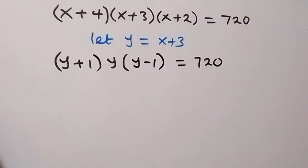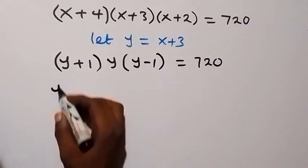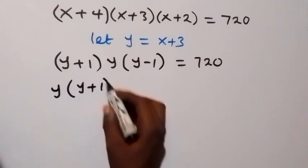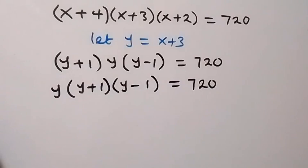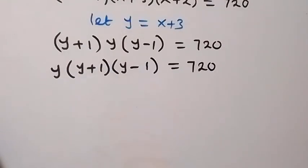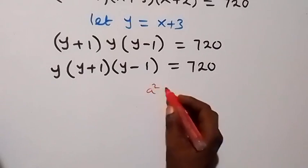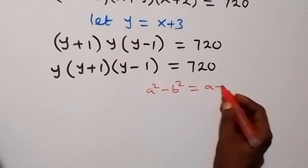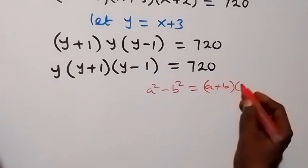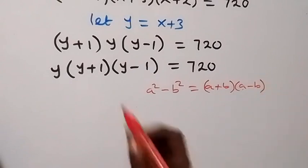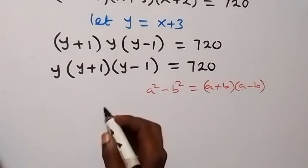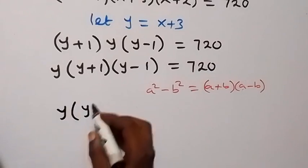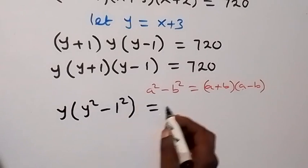We rearrange and write y first: y times (y+1) times (y-1) equals 720. Using the difference of squares, (y+1)(y-1) = y²-1, so we have y times (y²-1) equals 720, which expands to y³ - y equals 720.